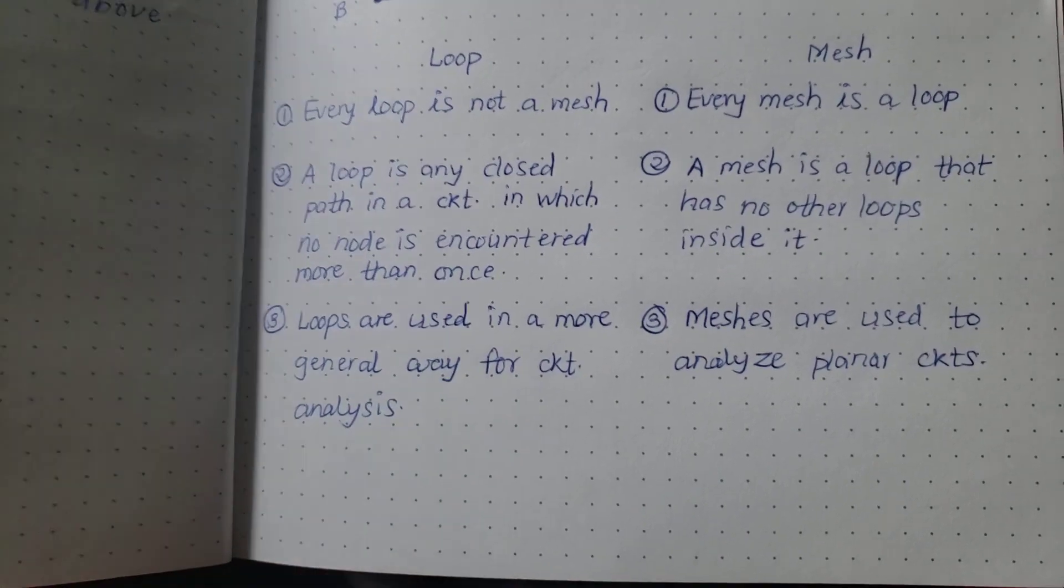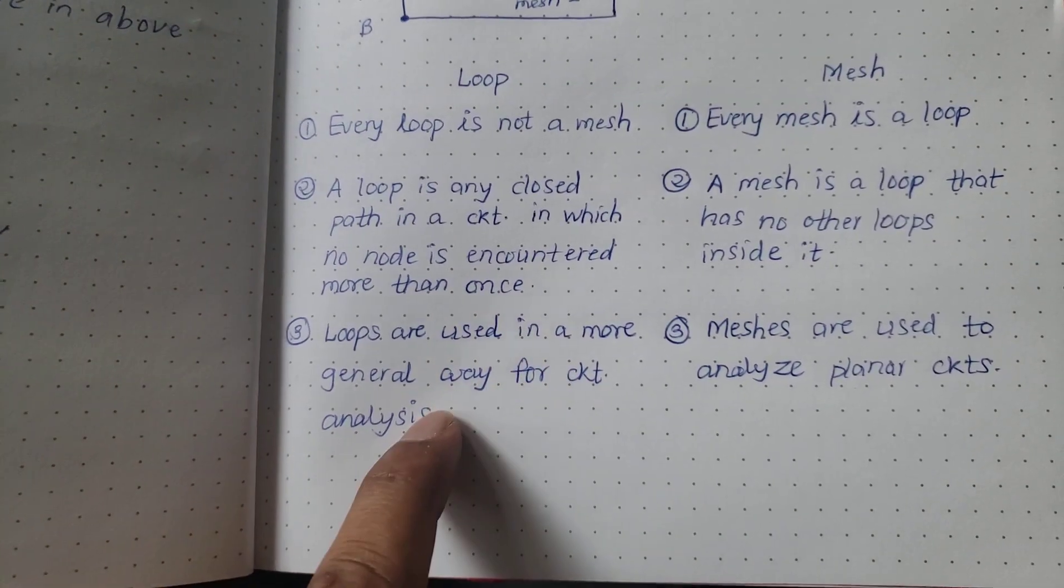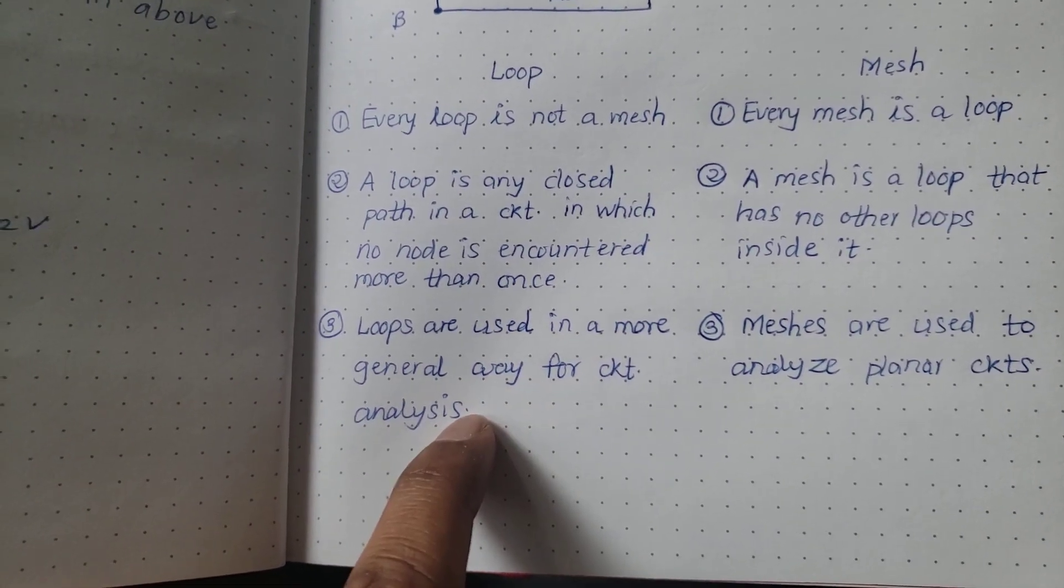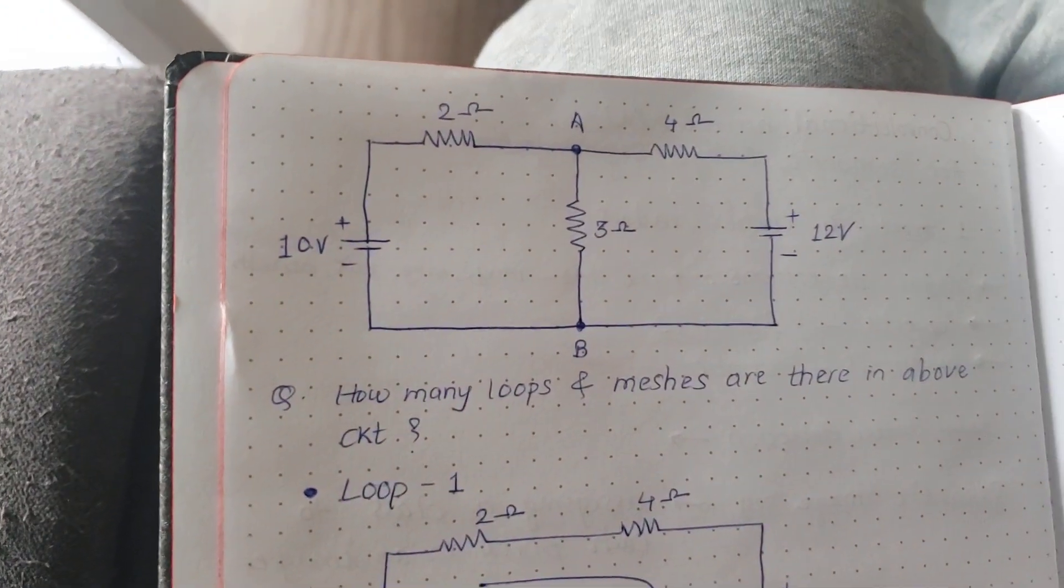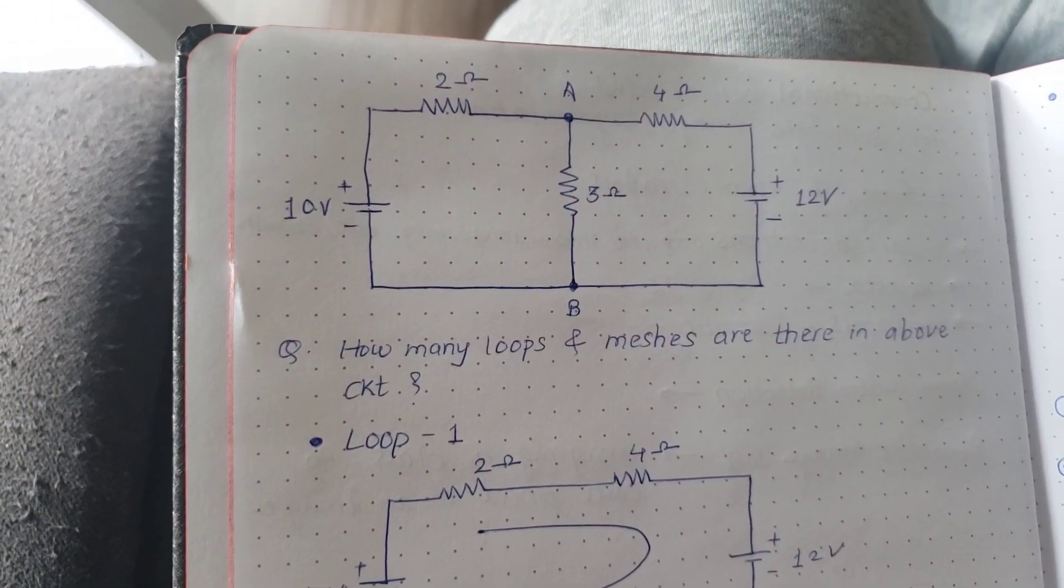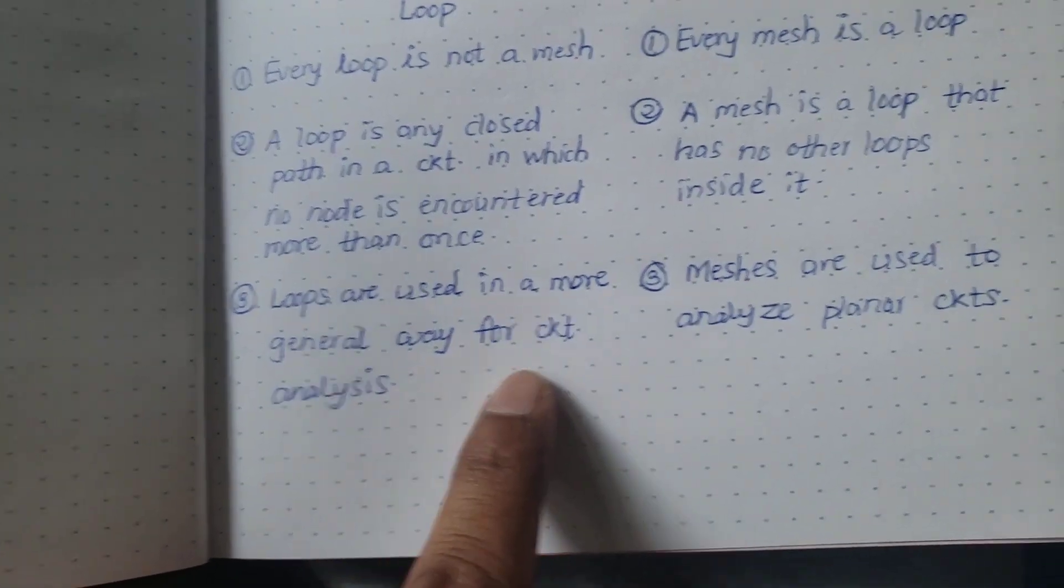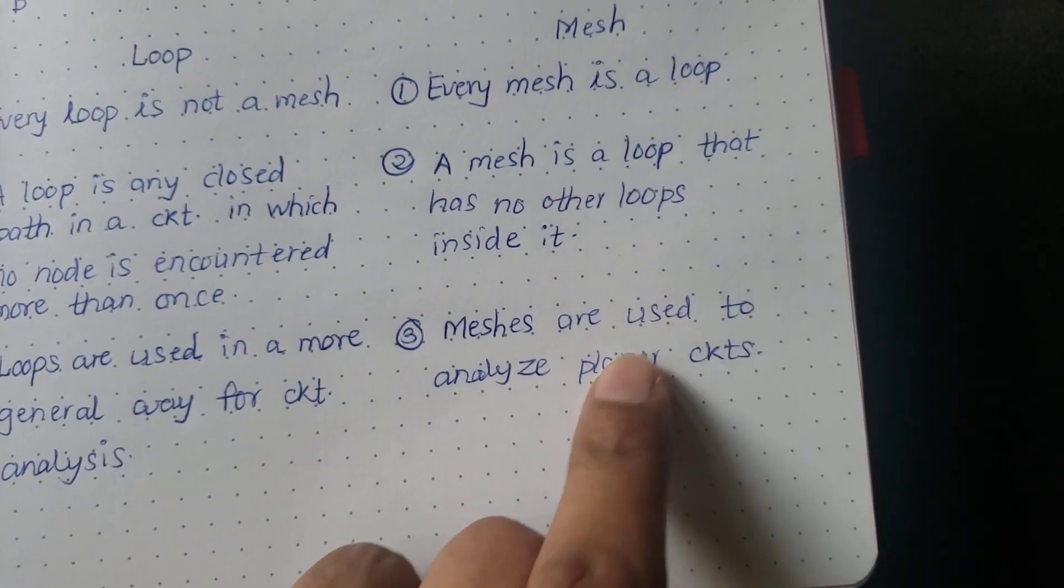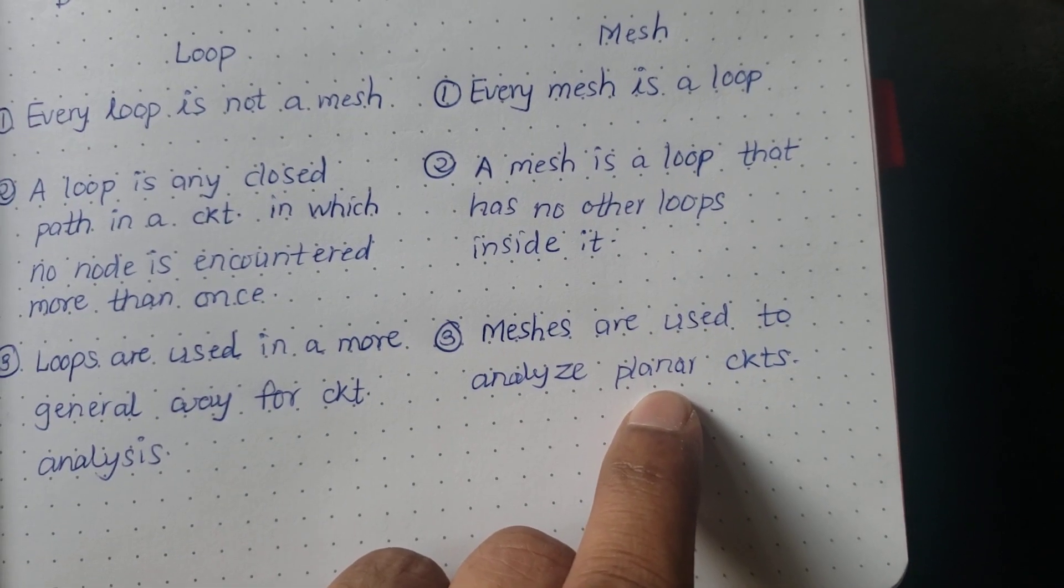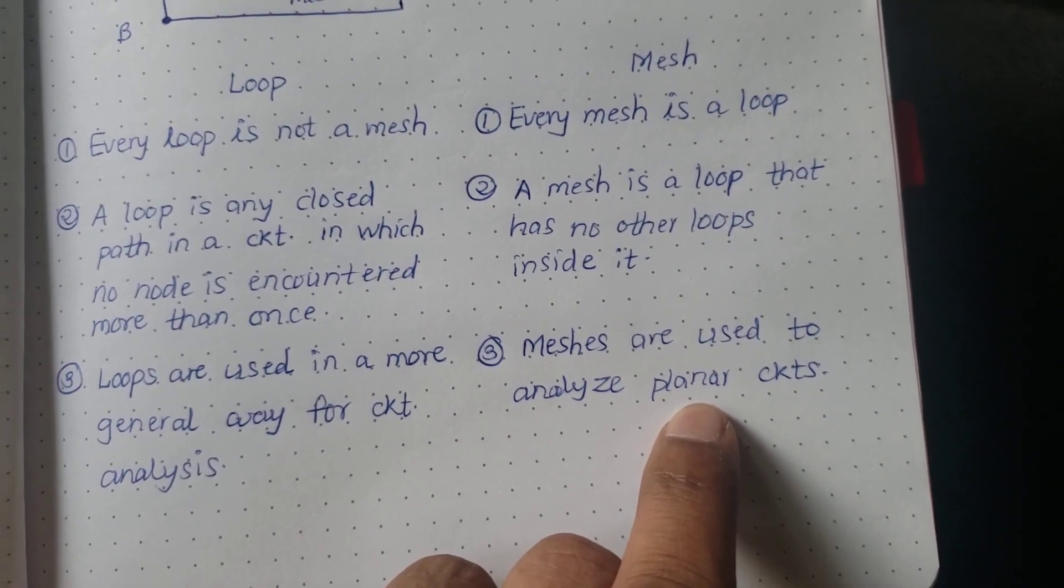What is the third difference? Loops are used in a more general way for circuit analysis. These are used for doing circuit analysis where we generally use Kirchhoff's voltage law, current law, and do the analysis.